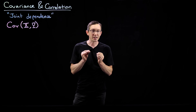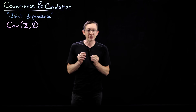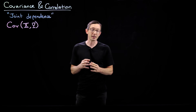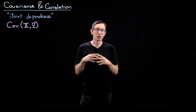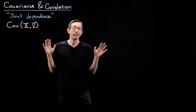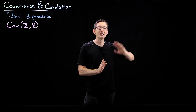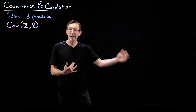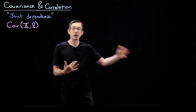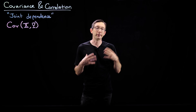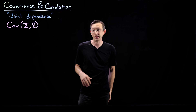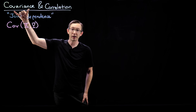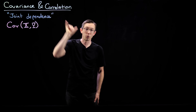Welcome back. Today we're going to introduce a really important set of concepts that we're going to use all the time in probability and statistics, especially when we deal with data, machine learning, fitting models with data. Those concepts are covariance and correlation.